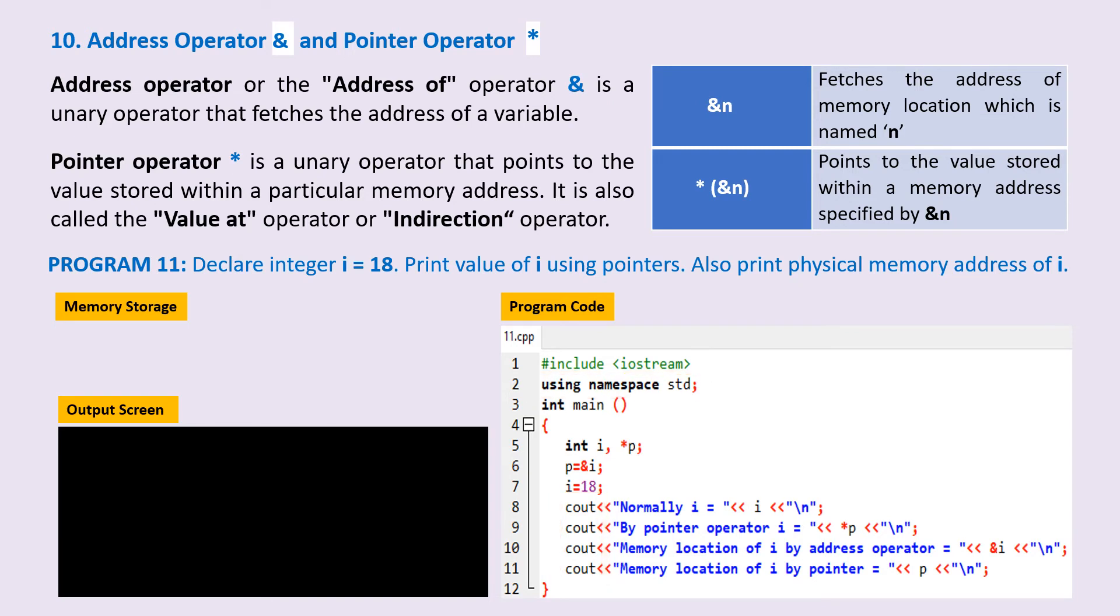On line 5, we declare int i, comma asterisk p. So memory space to store the variable i and a pointer named p to store address of an integer are physically created.